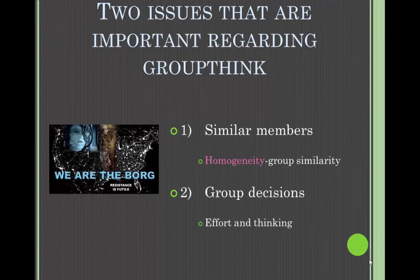Within groupthink, there are two important issues. First is the similarity of the members themselves — this homogeneity is considered the group similarity. Second is the group decisions. Group decisions that are not thoughtfully considered by everyone may facilitate groupthink. Quality of effort and quality of thinking are essential in this aspect.